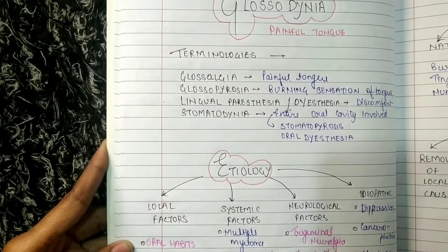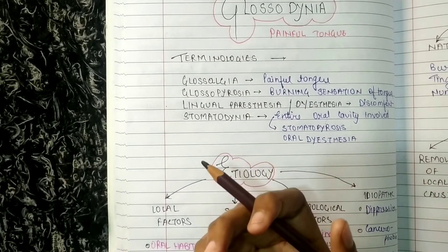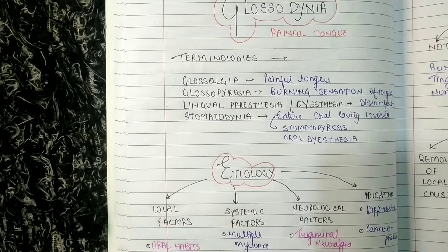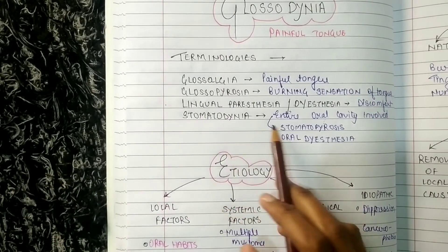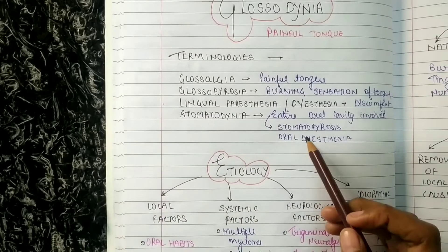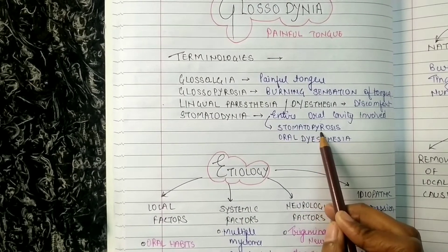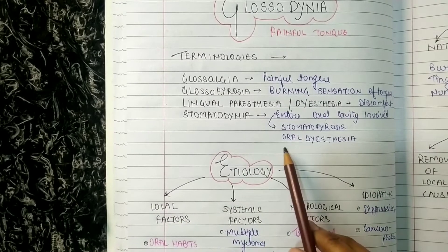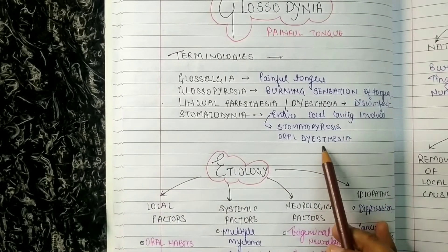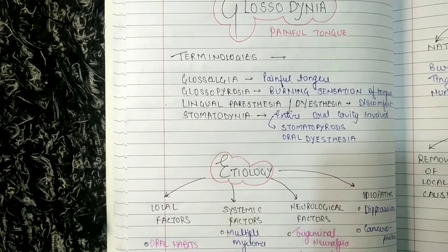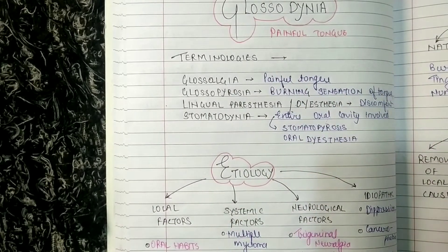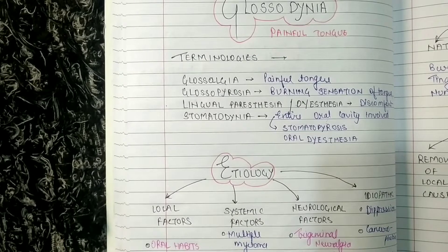Stomatodynia means the whole oral cavity is involved — not just the tongue but the entire oral cavity — so there will be painful sensation or burning throughout the oral cavity. This can also be called stomatopyrosis, meaning burning sensation of the whole oral cavity, or oral dysthesia, meaning discomfort in the entire oral cavity.